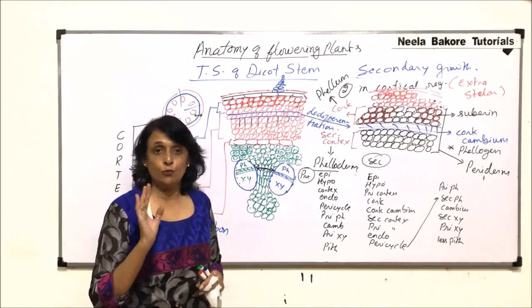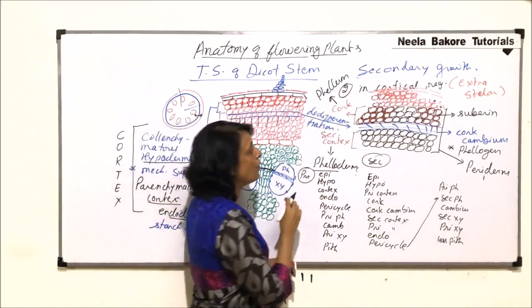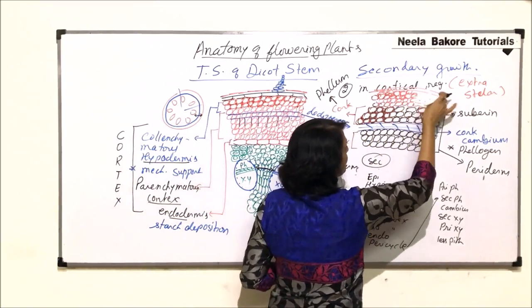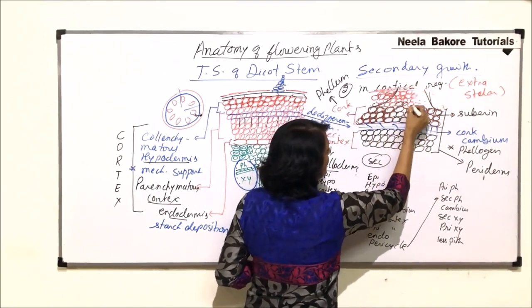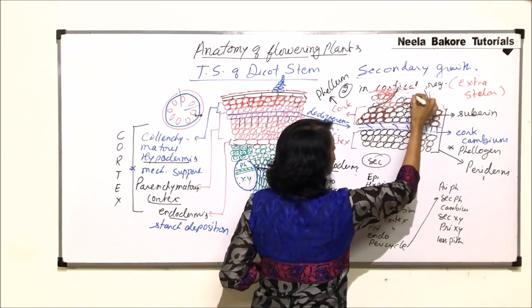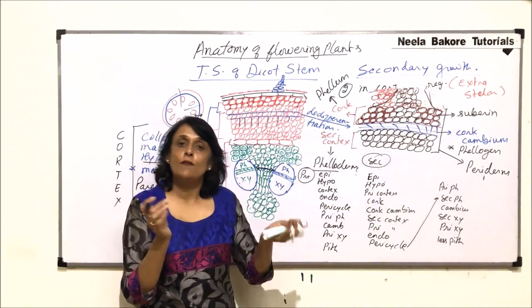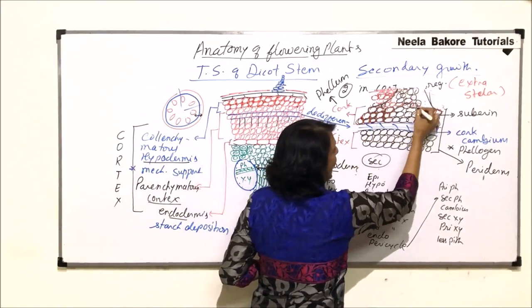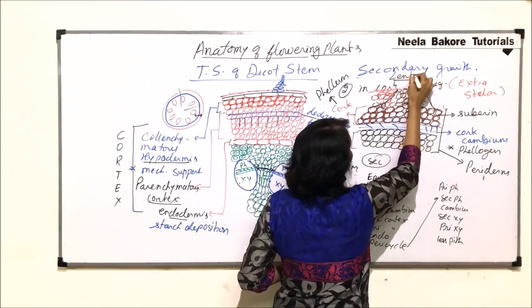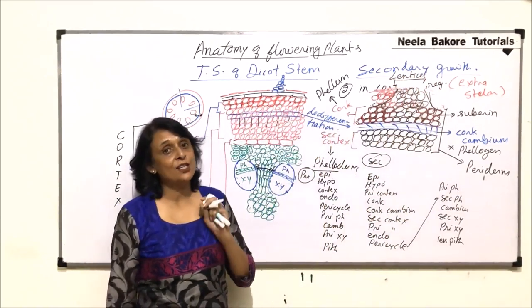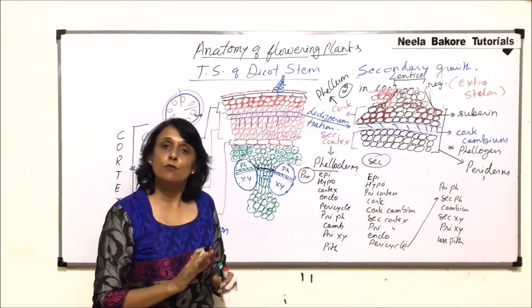If secondary growth continues, because of the cork the gaseous exchange to the outer cells would be lost, so slowly these cells will be lost — the epidermis and hypodermis fall off, leaving only these parenchyma cells loosely arranged. This structure is known as lenticel. Lenticel is an area through which gaseous exchange takes place, as it is all parenchyma allowing simple diffusion and osmosis.